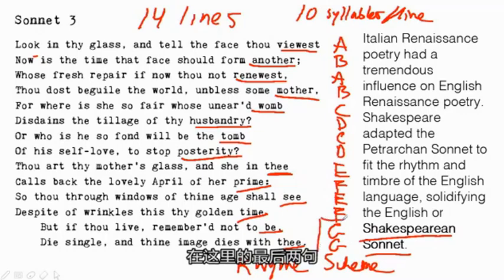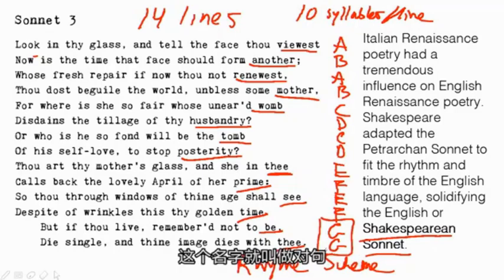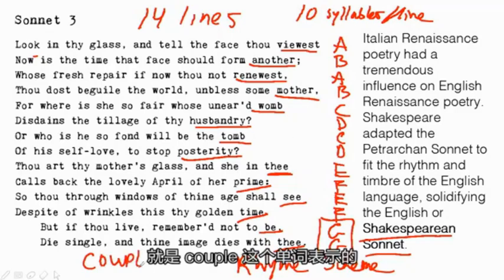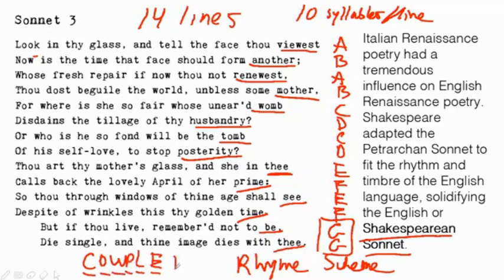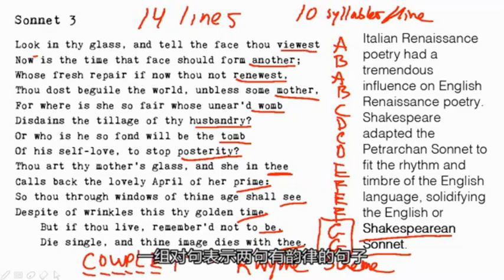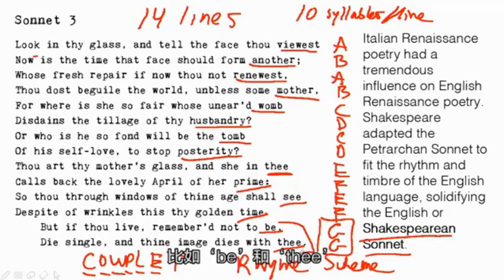These final two lines have a very special name that we're going to be using when we analyze Macbeth. The name is a couplet. 'Couple' means two — a unit of two — and a couplet means two lines that rhyme, such as 'be' and 'thee.'